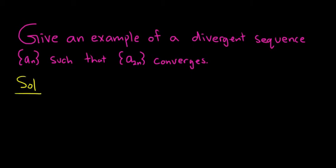When you think of divergent sequences, you can often think of things like n. That's a sequence, and that diverges. It goes off to infinity. But if you look at the even terms in this case, that's really not going to help you. You'll just get 2n, and that's still going to go to infinity, so that fails.